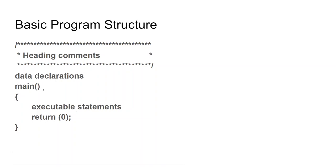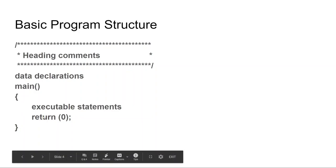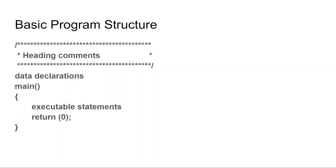We have head and comments at the top, then data declarations, then the function main. The two parentheses right after main are where we put in our arguments — the data coming into the function. The code block of main is between the curly braces. We have executable statements, and then we return some value — return zero. If the function has any type other than void, you have to return some value. You should return whatever type you declare the function is.